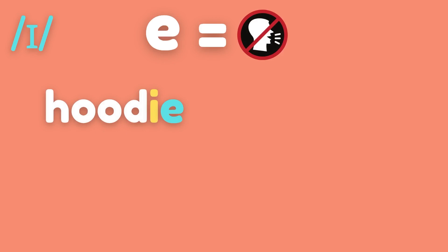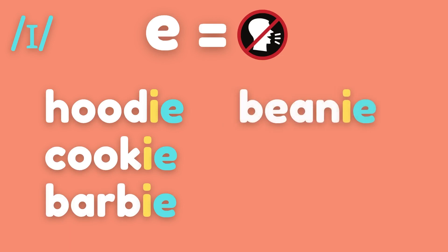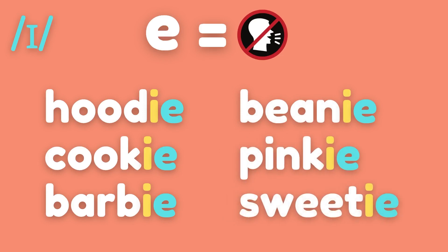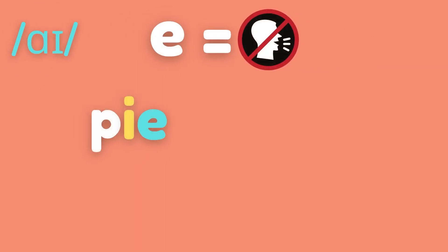E is silent. Hoodie, cookie, bobby, beanie, pinky, sweetie.